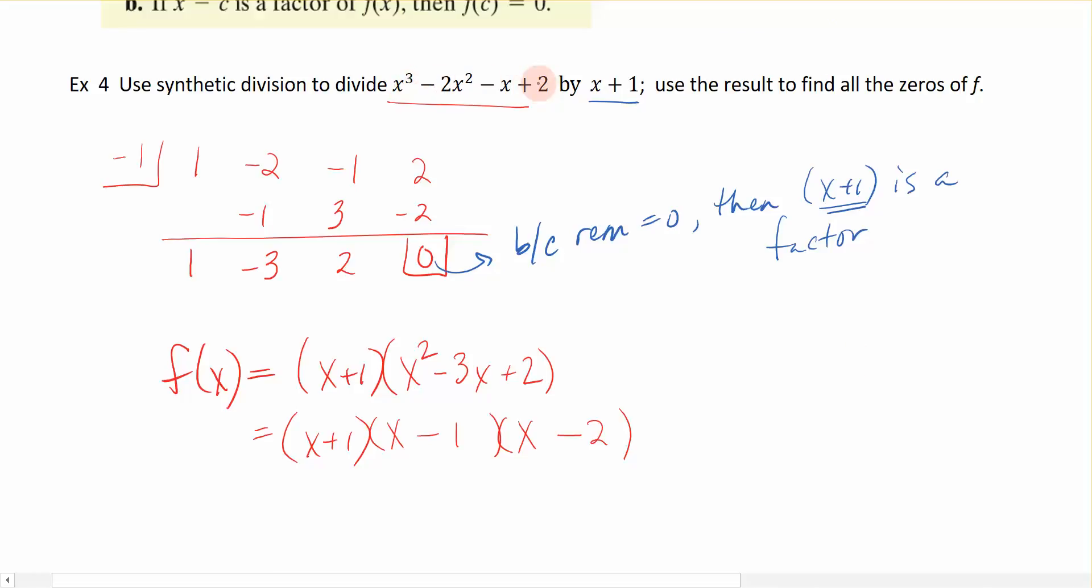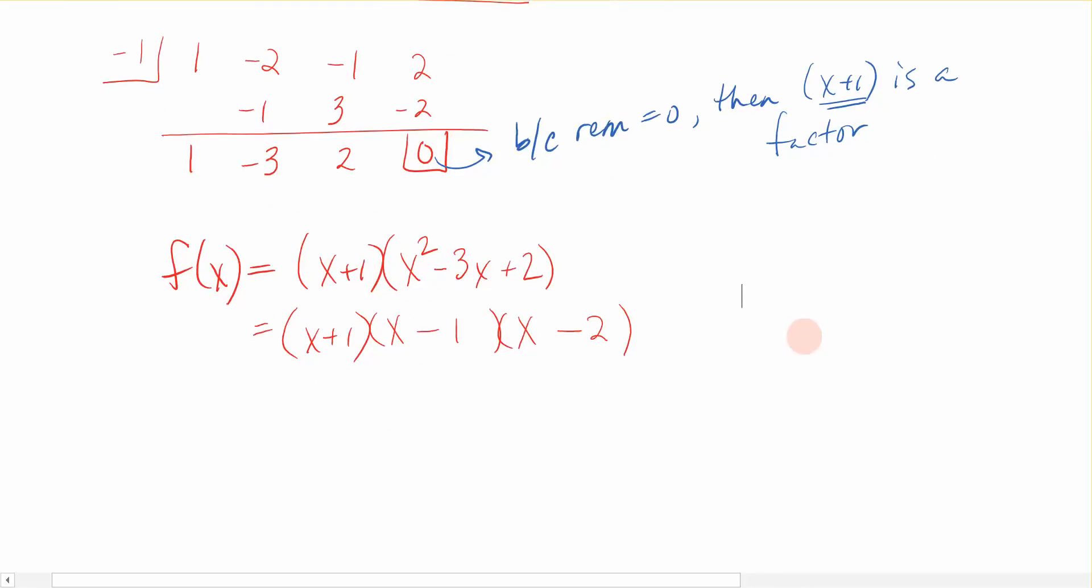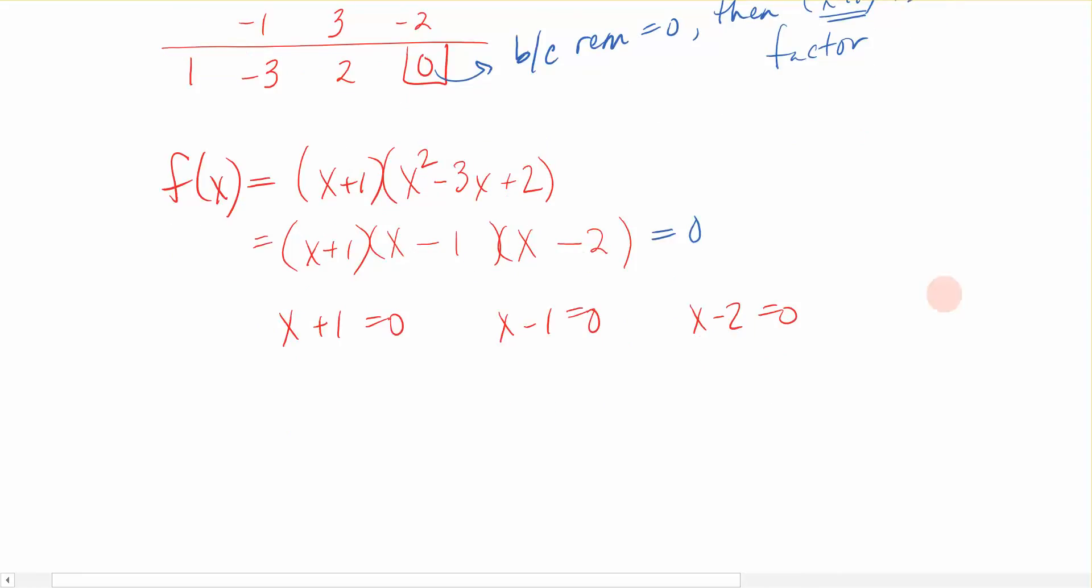So what did I do? I took this third degree polynomial, which is 4 terms, and I rewrote it as the product of these factors or these terms right here. That allows me to then use that 0 product property and take each of the factors, set them equal to 0. x plus 1 equals 0, x minus 1 equals 0, x minus 2 equals 0.